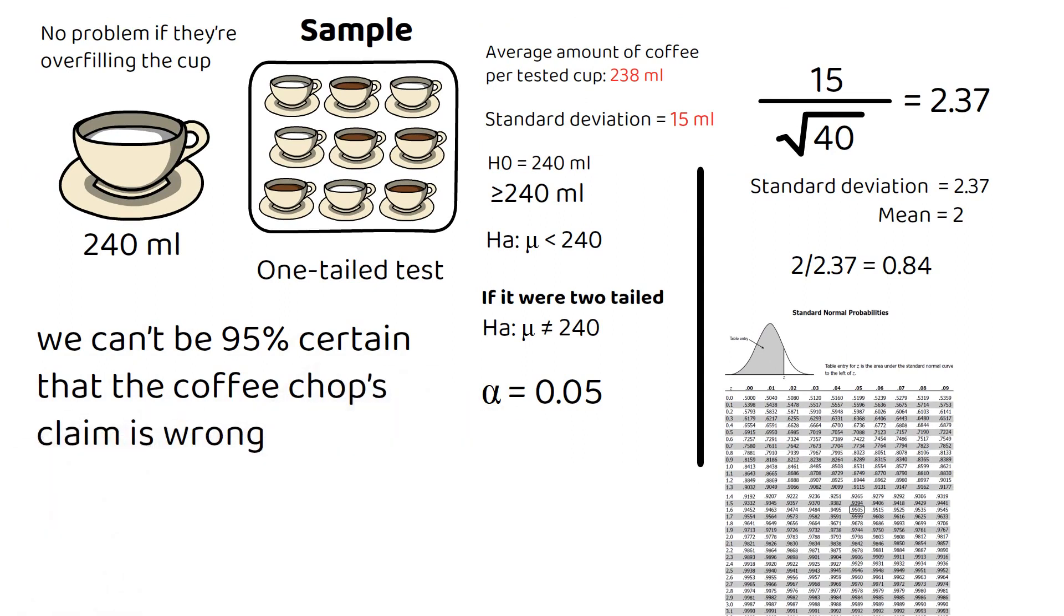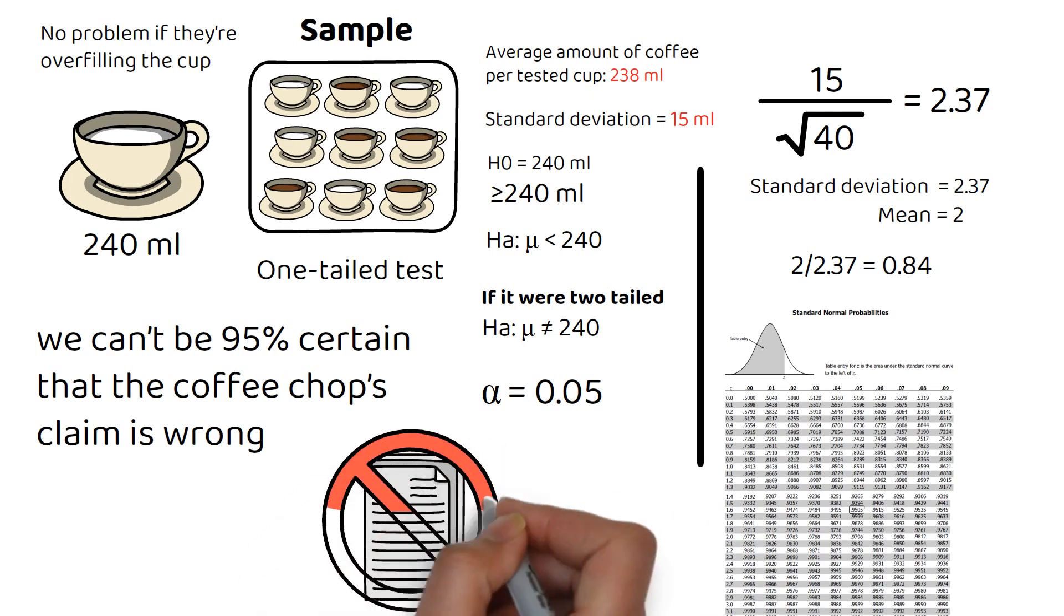We, therefore, cannot reject the null hypothesis. In plain English, based on our sample, we don't have sufficient evidence to claim that the coffee shop pours less than 240 milliliters of coffee on average. Let's look at another example.